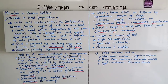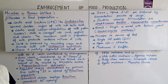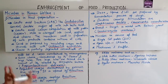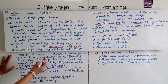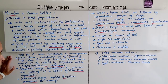Curd is prepared by inoculating cream and skimmed milk with Lactobacillus acidophilus — remember this name, it is very important and often asked for one or two marks. Cheese is a partially degraded concentrate of milk fat and casein, which is the milk protein, manufactured by microorganisms.